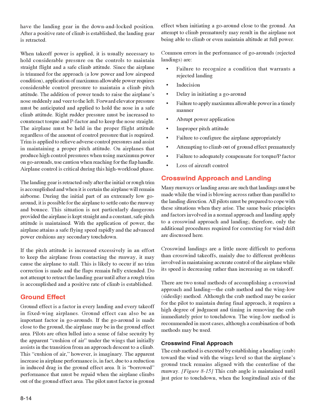Crosswind Approach and Landing. Many runways or landing areas require landings while the wind is blowing across rather than parallel to the landing direction. The same basic principles involved in a normal approach and landing apply to a crosswind approach and landing—only the additional procedures required for correcting for wind drift are discussed here. Crosswind landings are a little more difficult to perform than crosswind takeoffs, mainly due to maintaining accurate control of the airplane while its speed is decreasing. There are two usual methods of accomplishing a crosswind approach and landing: the crab method and the wing-low (side-slip) method. Although the crab method may be easier to maintain during final approach, it requires a high degree of judgment and timing in removing the crab immediately prior to touchdown. The wing-low method is recommended in most cases.